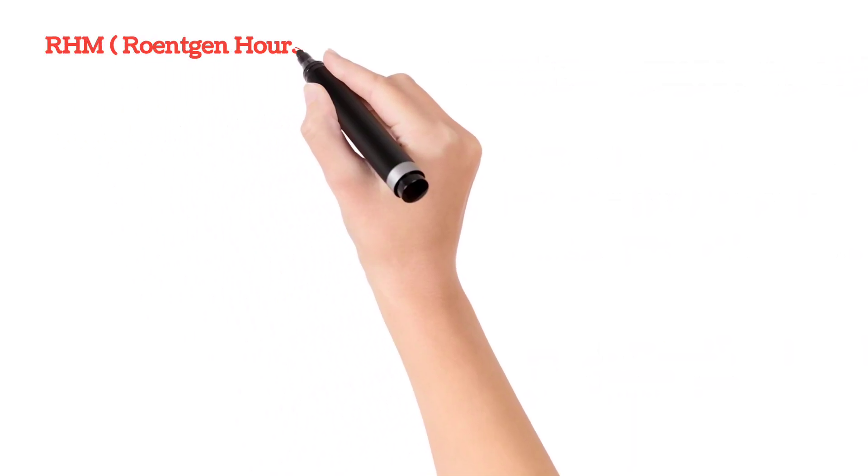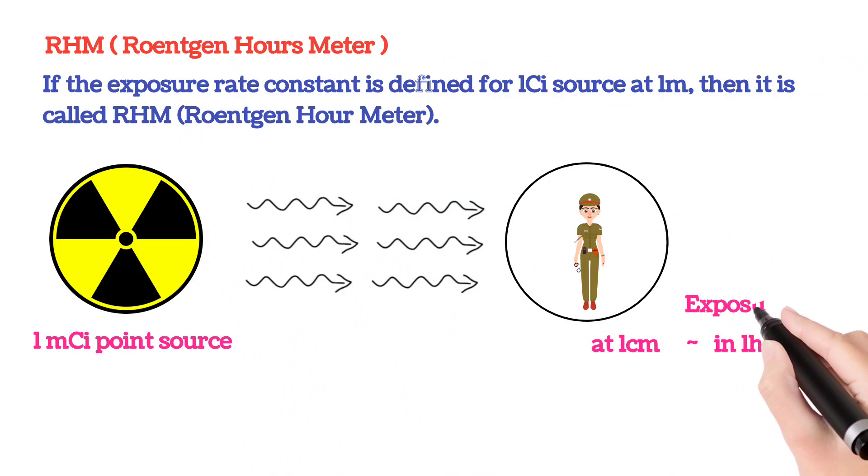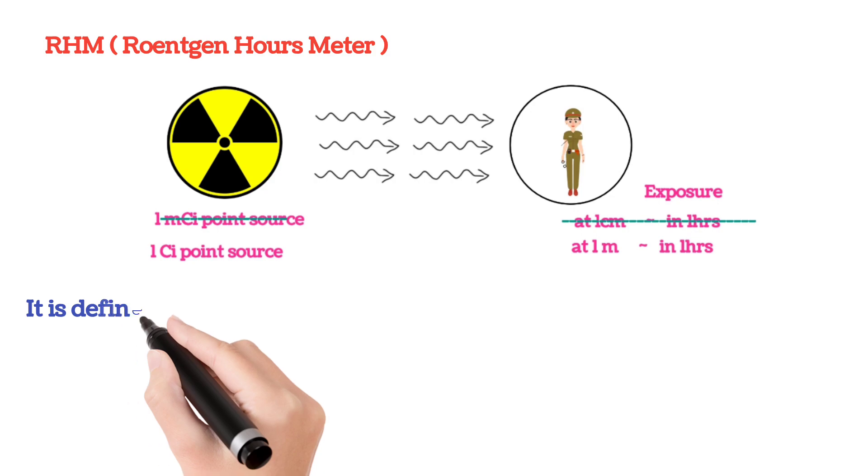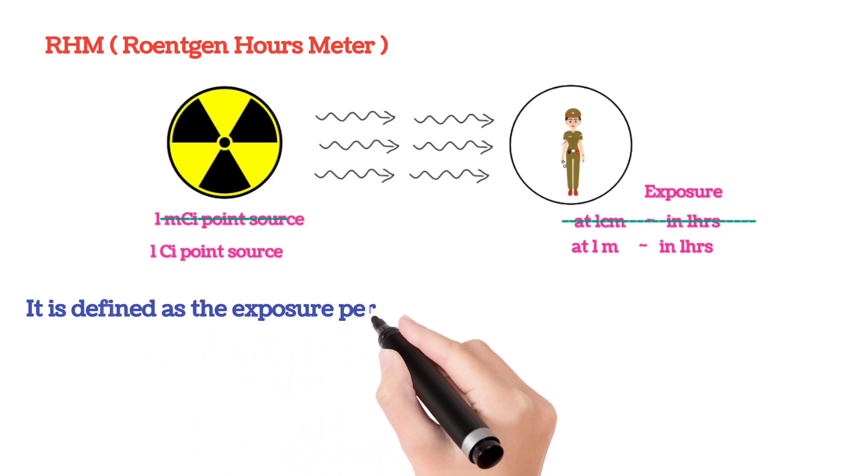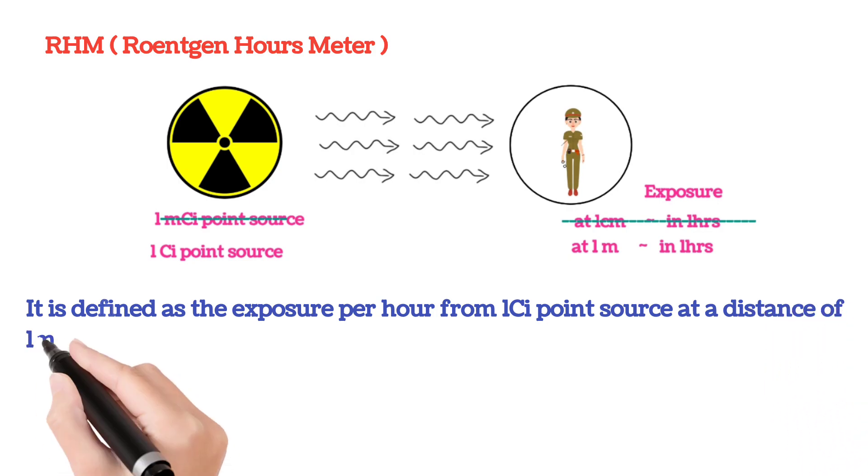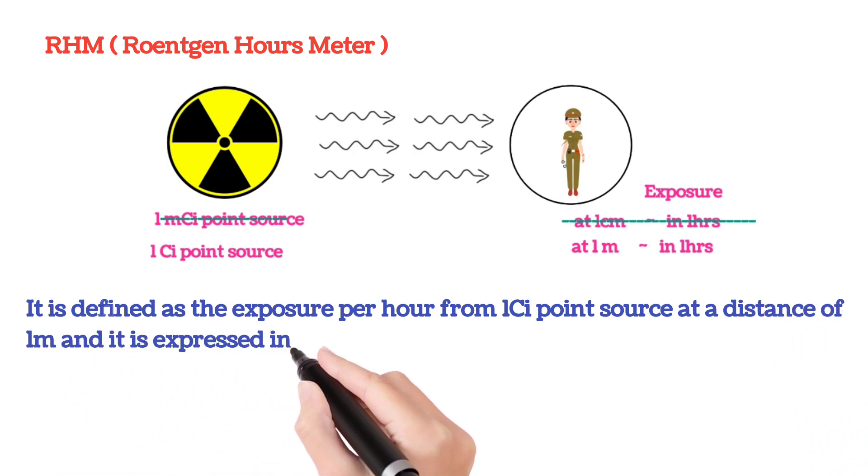If the exposure rate constant is defined for 1 curie source at 1 meter, then it is called RHM, roentgen hour meter. It is defined as the exposure per hour from 1 curie point source at a distance of 1 meter, and it is expressed in roentgen meter square per curie hour.